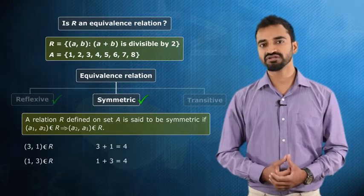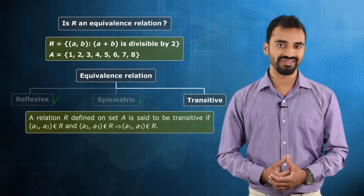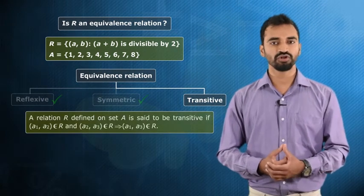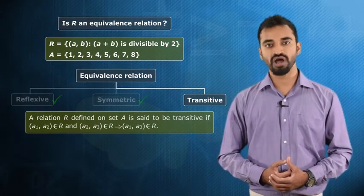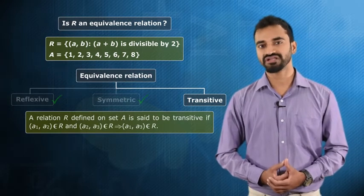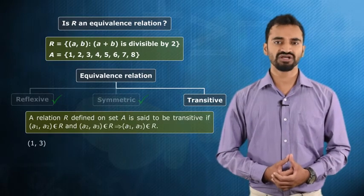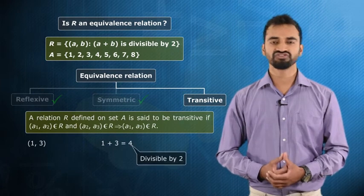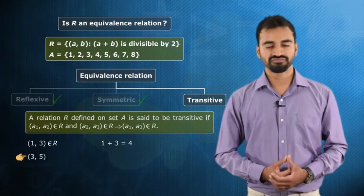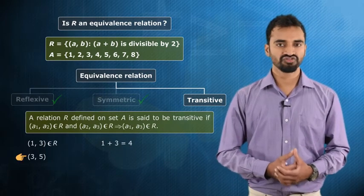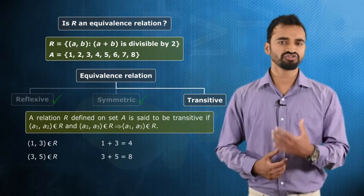Now let's find out whether the given relation R is transitive on set A or not. A relation is transitive if (a1, a2) belongs to R and (a2, a3) belongs to R implies that (a1, a3) also belongs to R, for every a1, a2 and a3 belonging to set A. Let's take (1, 3): 1 plus 3 equals 4, which is divisible by 2, so (1, 3) belongs to R. Now let's take (3, 5): 3 and 5 also belong to set A, and 3 plus 5 equals 8, which is divisible by 2, so (3, 5) also belongs to R.